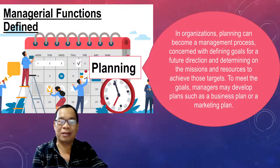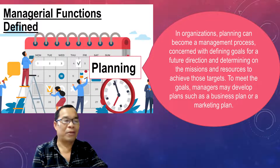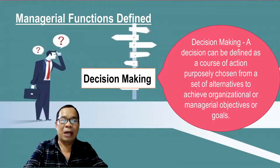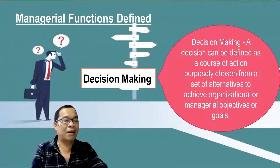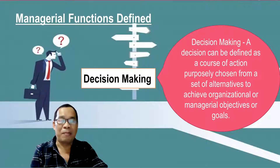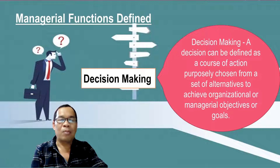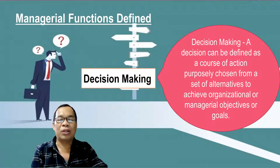Planning always has a purpose. Now, what is decision making? A decision making can be defined as a course of action purposely chosen from a set of alternatives to achieve organizational or managerial objectives or goals.